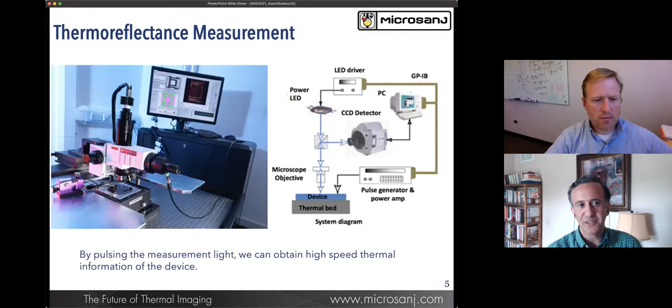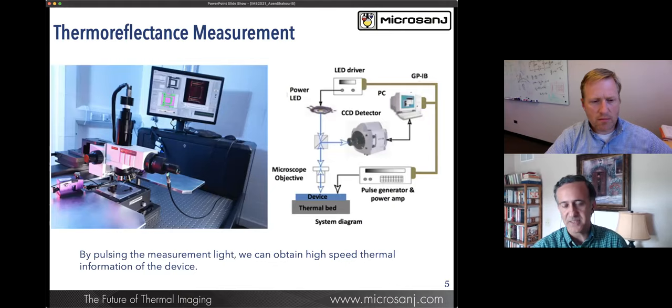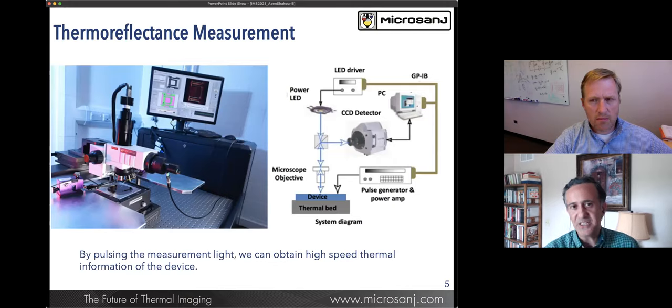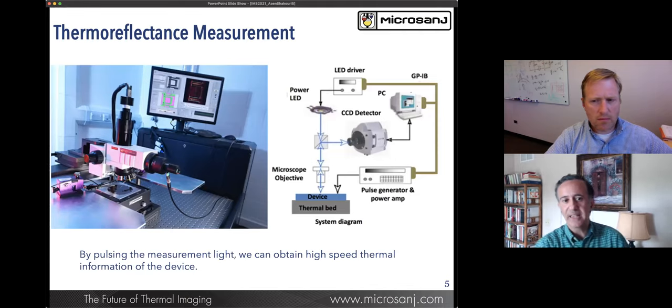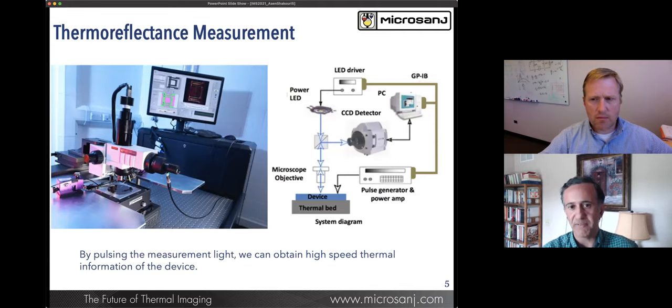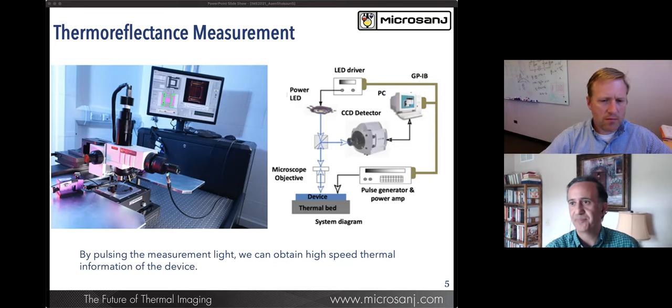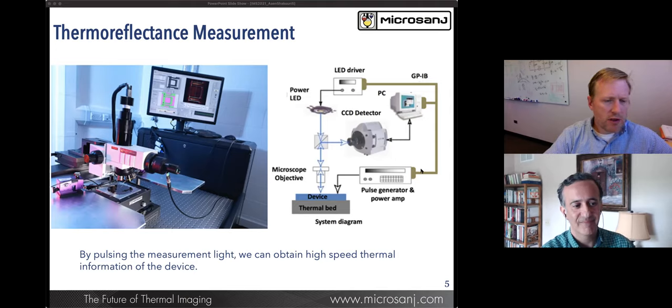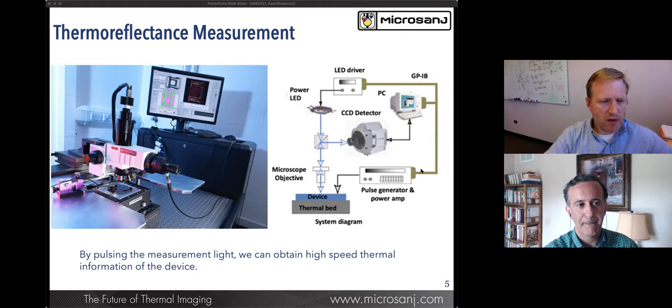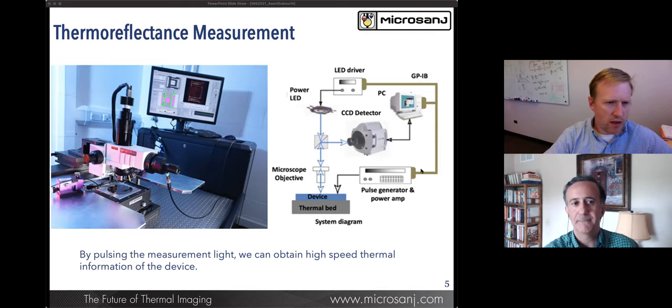The next view graph shows a thermoreflectance measurement system. The idea is that the same optical microscope that you use to visualize your sample with the right synchronization with the light source can be used to measure various light changes in thermoreflectance, giving us a sensitivity of 10 minus 5 in reflection, which corresponds to a temperature sensitivity in tens of millikelvin. This is a system installed in my former laboratory at the University of Surrey showing the imaging of a 74 gigahertz device.